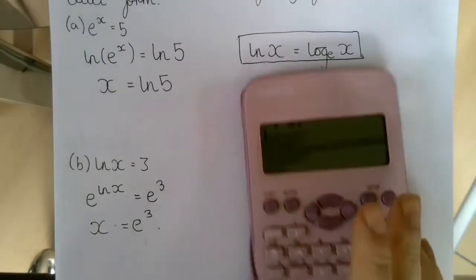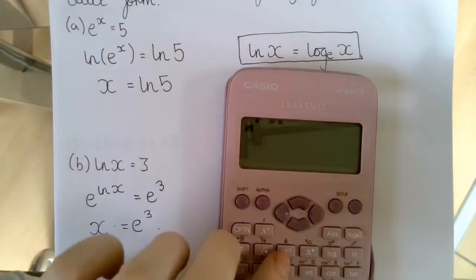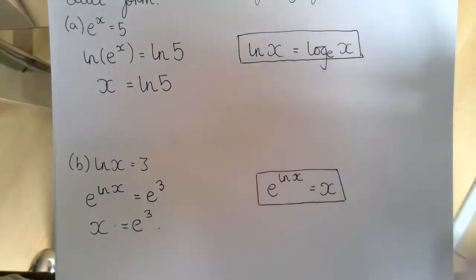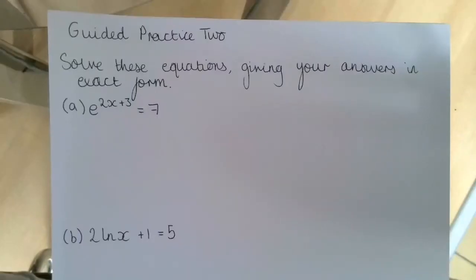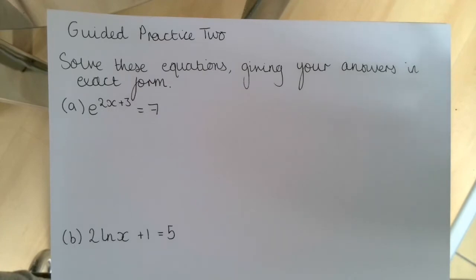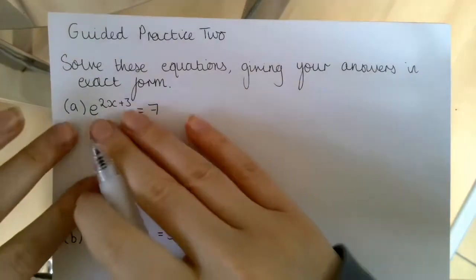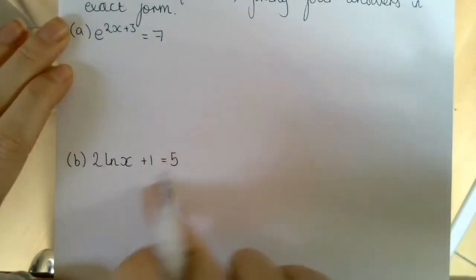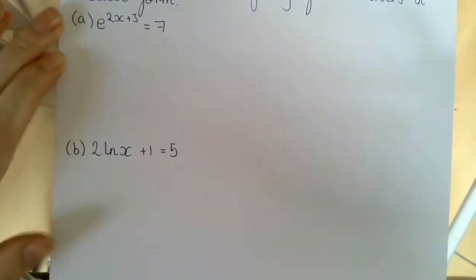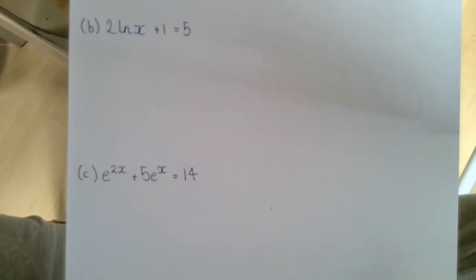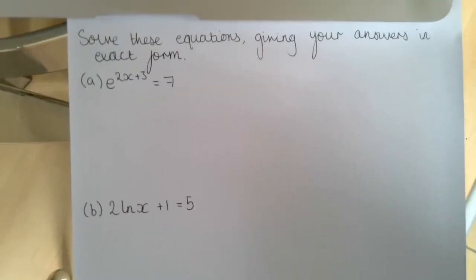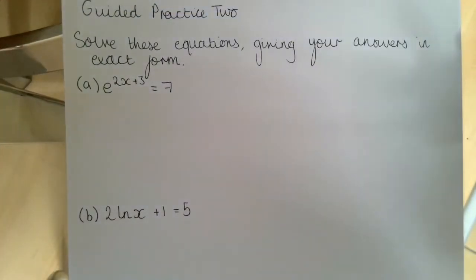If we typed e to the power of 3 into the calculator we'd get a decimal number, but we're not rounding it — we're leaving it in exact form. For our second guided practice, we've got powers of e that are expressions in terms of x, logarithms with coefficients in front, and equations with two terms with e to the power of x as a common factor. This includes a few more steps, but it's exactly the same method as before.